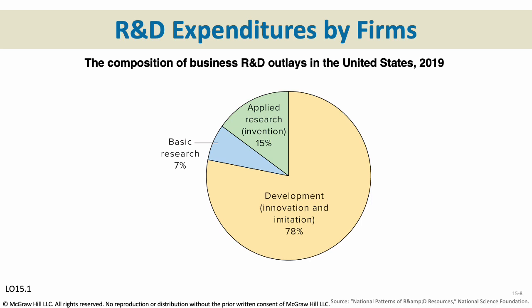In 2019, basic research was about 7% of R&D and new inventions (applied research) about 15%. Basic research is setting groundwork — generic research. Applied research is something like wanting to invent a 6G cell phone or the next generation of computer processor. Then there's development, innovation, and imitation — improving the products we have. When Apple comes out with the iPhone 15, that's development: they already have the product and they're improving it. If Mercedes saw Tesla coming out with luxurious electric cars and invented their own, that would be imitation.